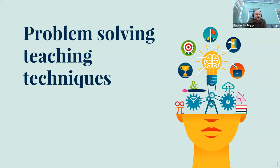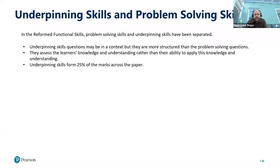To address this, let's look at some problem solving teaching techniques that can be used in the classroom. First, let's look at how the assessments are set out. In the reformed functional skills, problem solving skills and underpinning skills have been separated. Underpinning skills questions may be in a context but are more structured and scaffolded. They assess the learner's knowledge and understanding rather than their ability to apply it, and underpinning skills form 25% of the marks. This means problem solving is 75%, which is significantly higher than on the GCSE assessment.